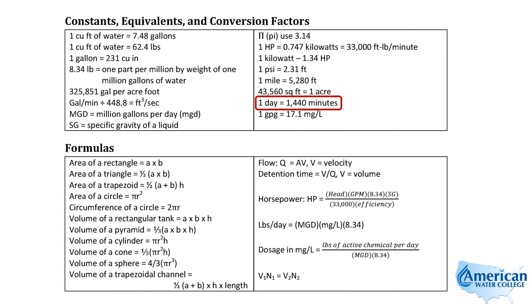We're looking at our equivalent sheet, our constants, equivalents, and conversion factors. They give us that one day has 1,440 minutes in it. So we'll go ahead and use this to convert GPM — gallons per minute — to MGD.